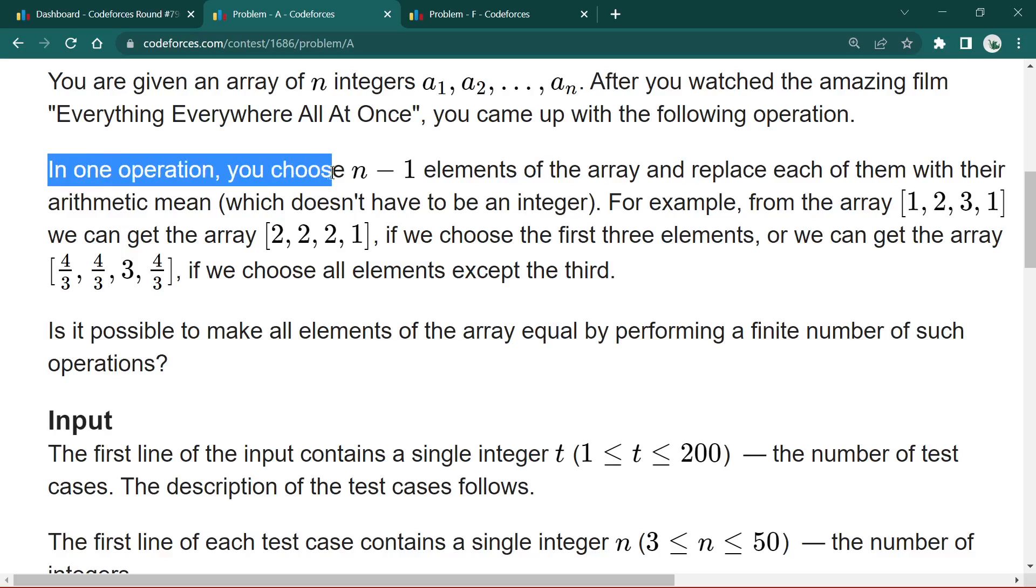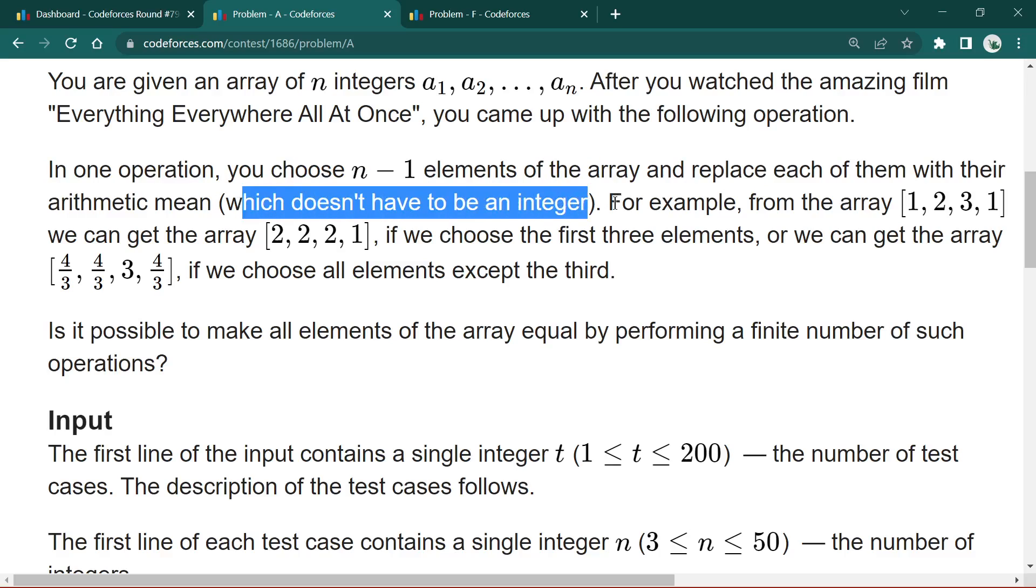In one operation, you can choose n minus one elements of the array and replace each of them with their arithmetic mean, which does not have to be an integer. For example, from the array, if you choose the first three elements 1, 2, and 3, their mean is the sum of all these divided by 3, which is 6 divided by 3, which is 2. So replace all these elements by 2.